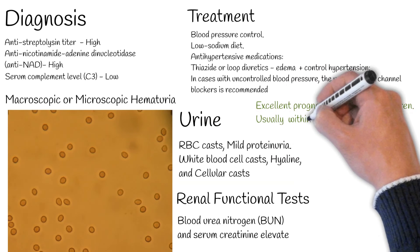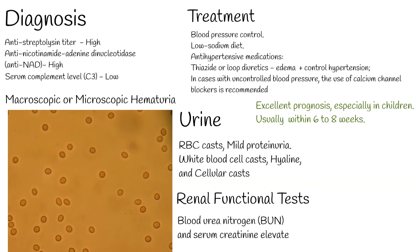Post-streptococcal glomerulonephritis has an excellent prognosis, especially in children, usually within 6 to 8 weeks. In adults, around 50% of patients continue to have reduced renal function, hypertension, or persistent proteinuria. Death in adults is often secondary to heart failure and renal dysfunction.